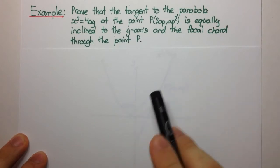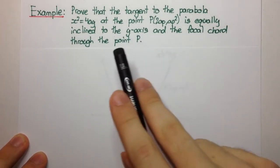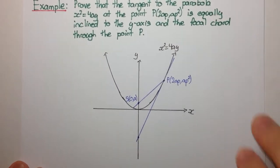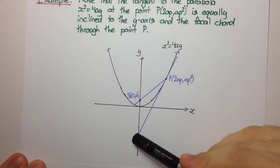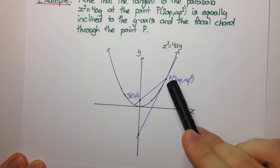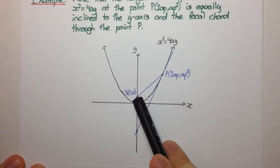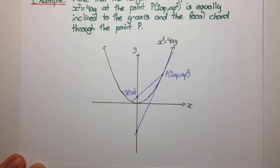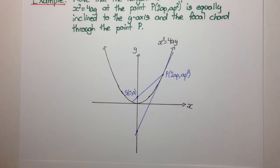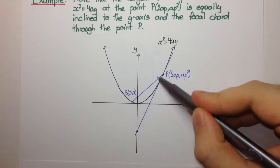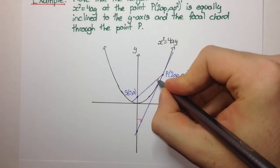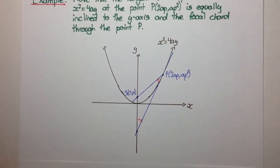What's this question asking? We need to show that the tangent is equally inclined to the y-axis and to the focal chord. Looking at the diagram, this is the tangent here, and here we have the focal chord that goes through P. Remember, a focal chord is any chord that passes through the focus, but this one also needs to pass through P, so this is the only such line. What we need to show is that this angle here is the same as this angle here — that's what it means by equally inclined.